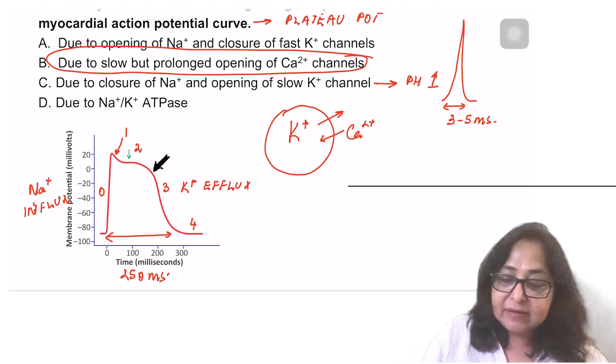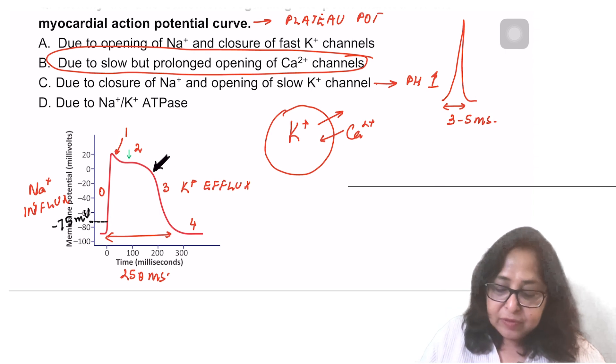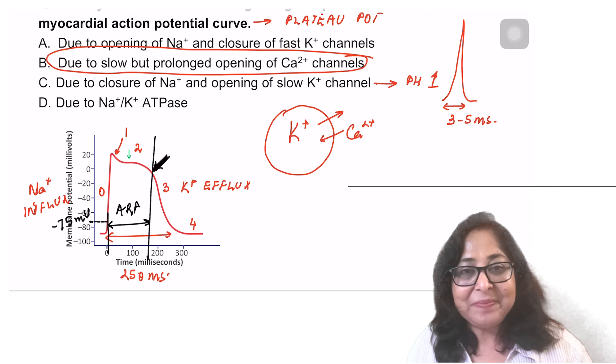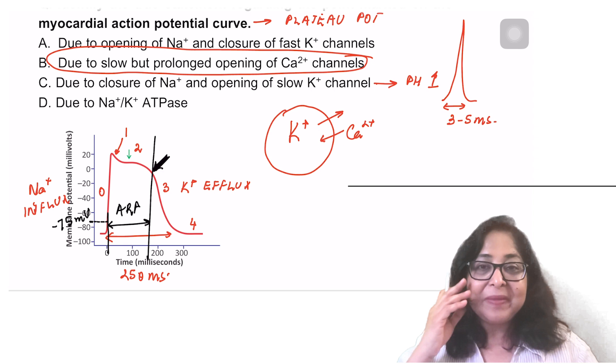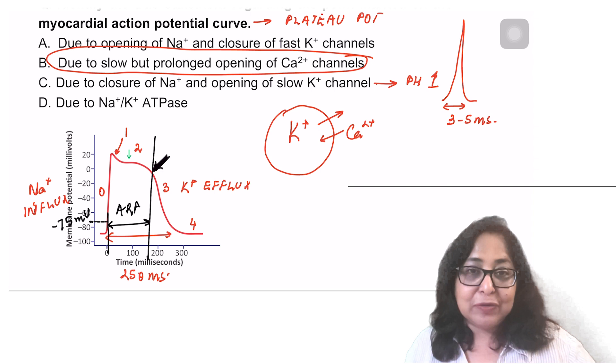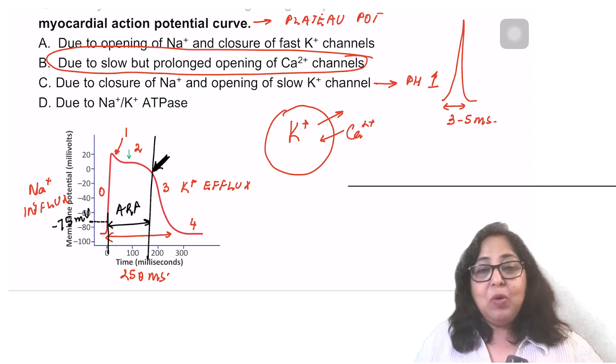What is absolute refractory period? It is from the firing level. Firing level in the cardiac muscle cells is minus 75 millivolts, till the repolarization is one third complete. This is known as the absolute refractory period, which has got widened here. This wide absolute refractory period is because of the plateau phase.